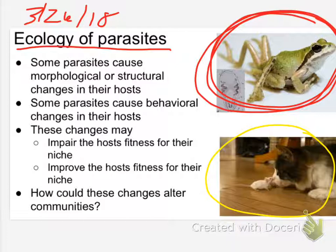My husband's uncle is blind in one eye because his mom contracted toxoplasmosis while pregnant — this was in the 50s and they didn't know about it then. So where do cats get it? Remember, all diseases and parasites have a vector of some sort. Mice are the intermediate host; cats are the final host. The cat eats the mouse that has the parasite, gets the parasite, and then poops it out. The parasite ends up on vegetation, the mouse eats it, and the cycle continues.